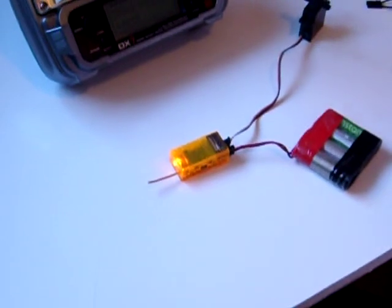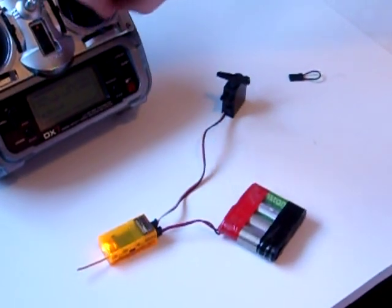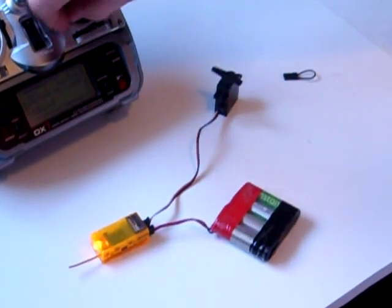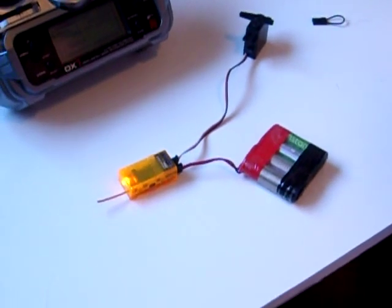We can confirm all is well by wagging the stick on the transmitter and you'll see the servo is responding fine. So that's the bind procedure.